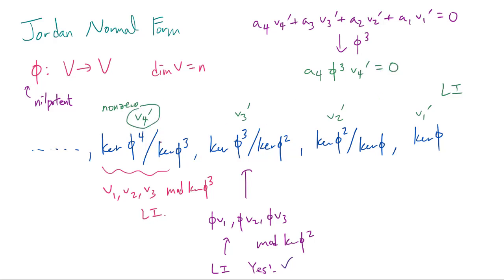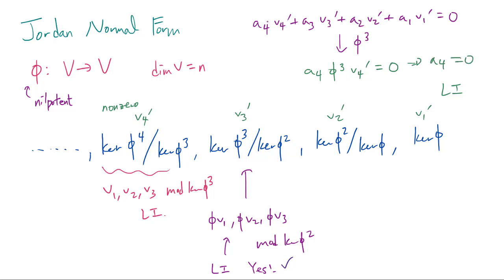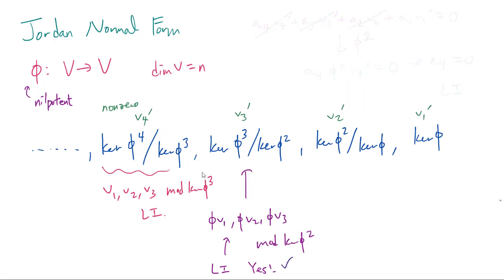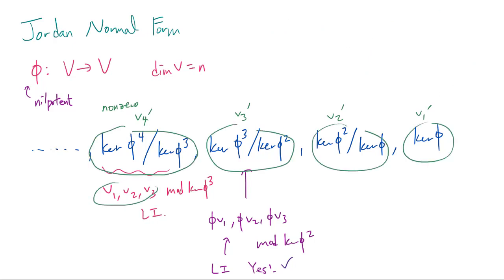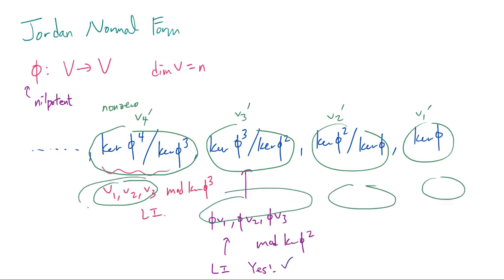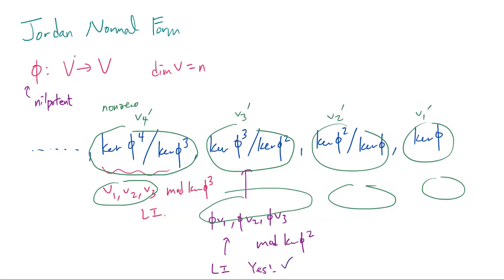To see why: suppose we have a linear combination and we apply phi cubed to both sides. Since v4 prime was a non-zero vector in kernel of phi to the 4th modded by kernel of phi cubed, phi cubed applied to v4 prime is going to be non-zero, telling us that a4 is 0. Then you apply phi squared to show a3 is 0, then apply phi to show a2 is 0, concluding these are in fact linearly independent. So if we have a basis for each quotient space and take all these bases together, they form a basis of V.